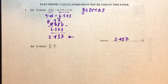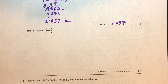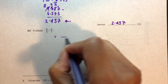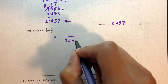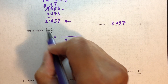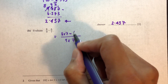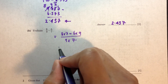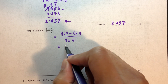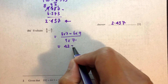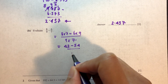That's part a. Moving on to part b — this is a fraction subtraction question. We need to find a common denominator by multiplying the two denominators: 9 times 7. For the numerator, cross multiply: 8 times 7 minus 6 times 9, over 63. So 8 times 7 is 56 — wait, 8 times 7 is 42 — minus 6 times 9 is 54, over 63.